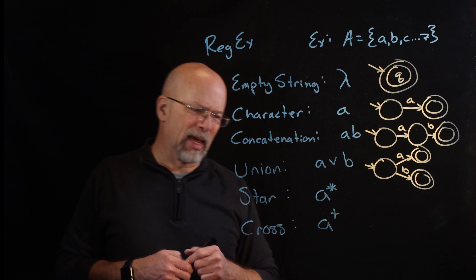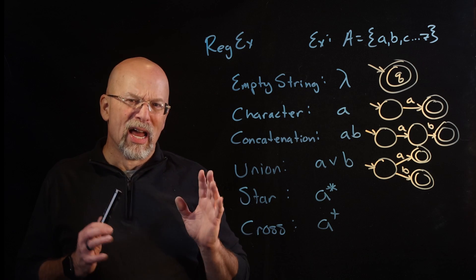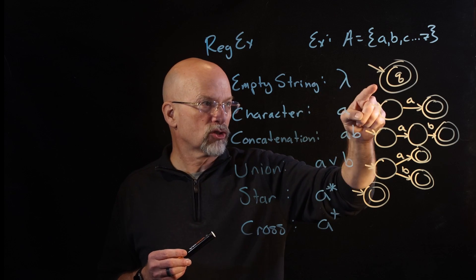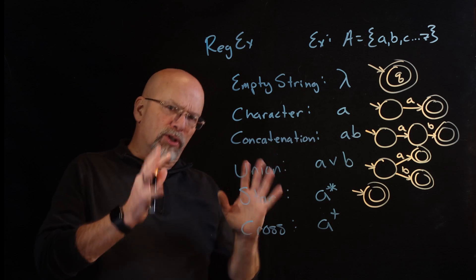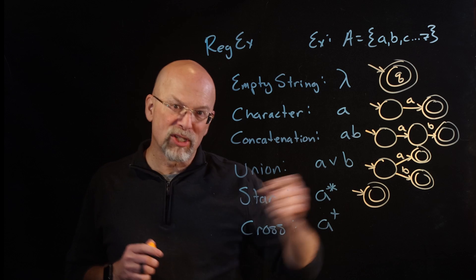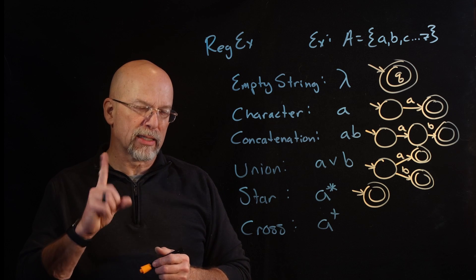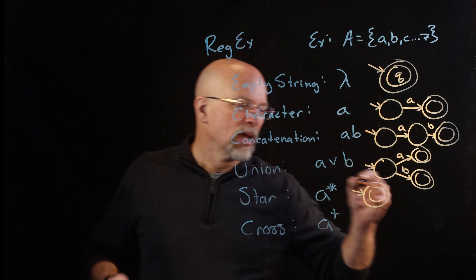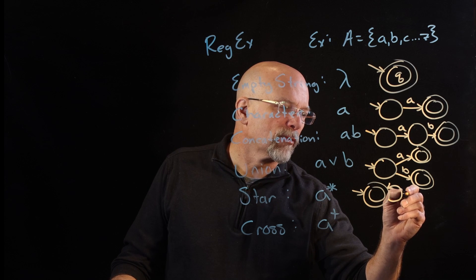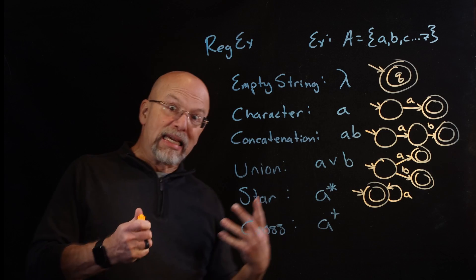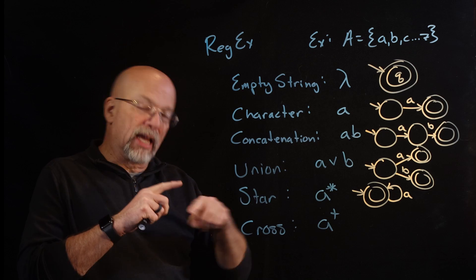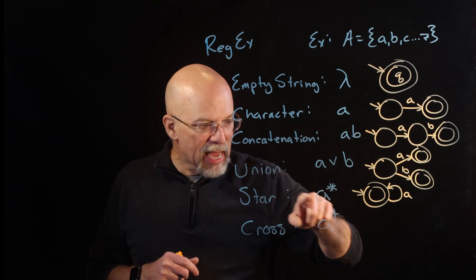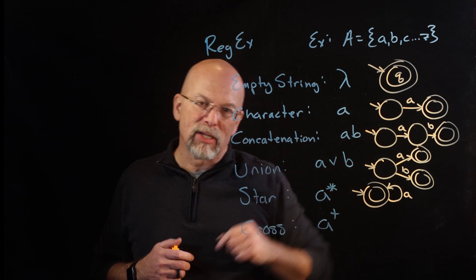Now the star and cross get more complicated. For star: since the empty string is valid, the initial state is also the final state. If we get no a's at all, we're still in the final state. If we receive one a, two a's, three a's — we should still be in a final state. So we make a loop: an edge that exits a state and comes right back into that same state. This diagram shows that any number of a's from zero upward keeps us in the final state.